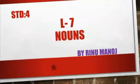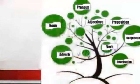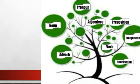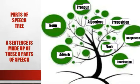Today I'm going to start a new topic — lesson number seven: Nouns. Look at this tree. This is a parts of speech tree. A sentence is made up of these eight parts of speech. You can learn a lot about a language by studying the parts of speech. If you know these parts of speech, you can learn any language easily.